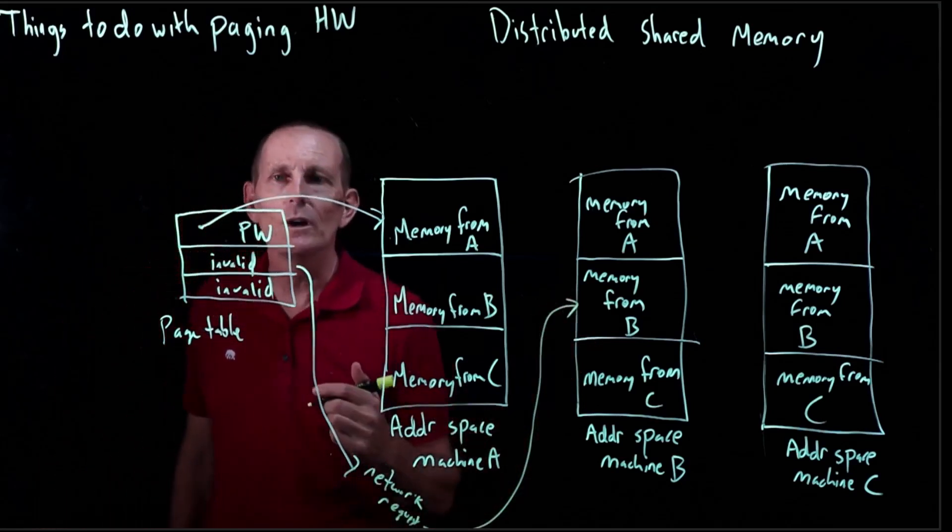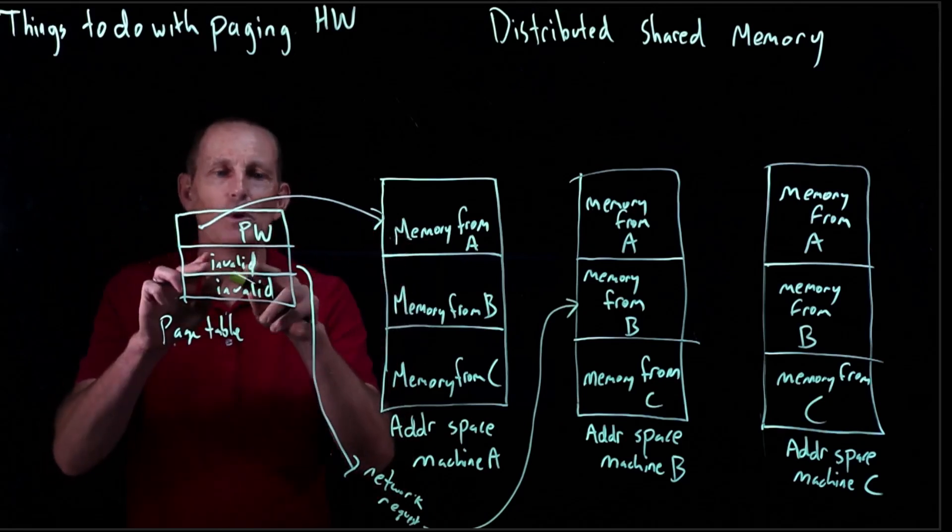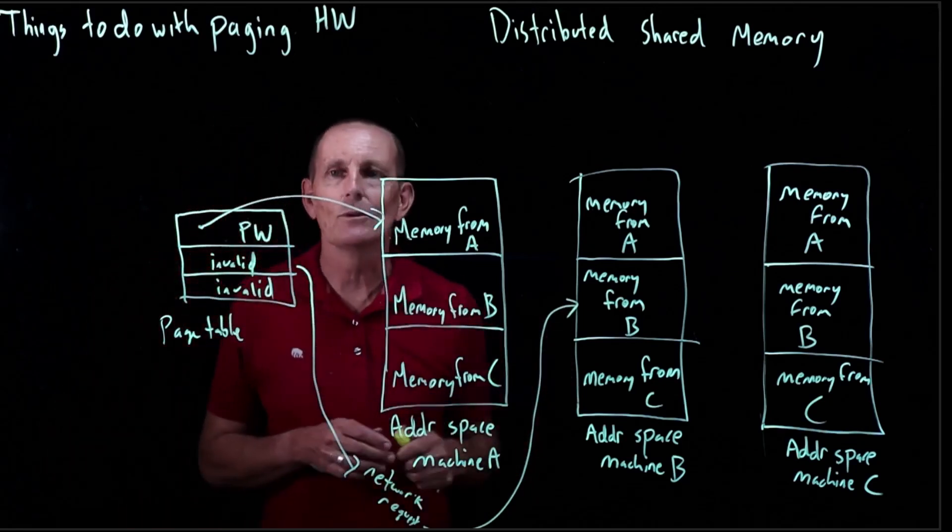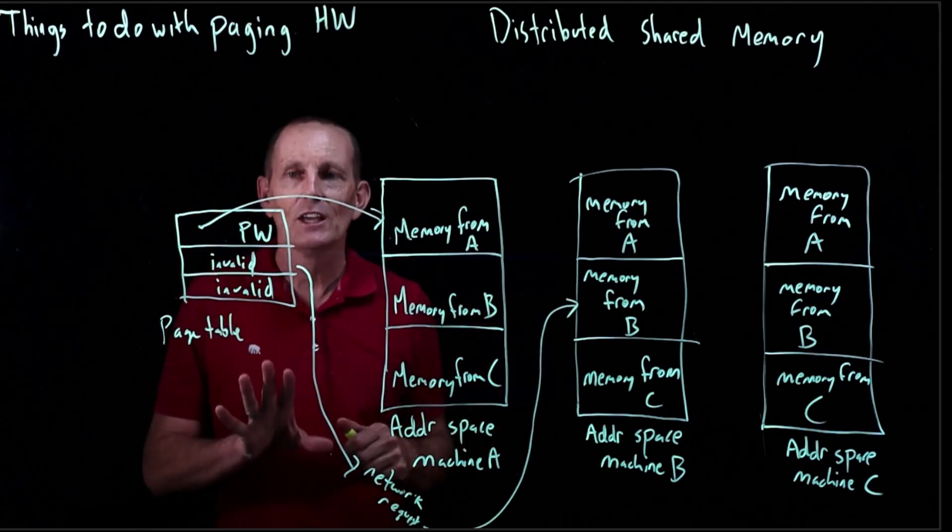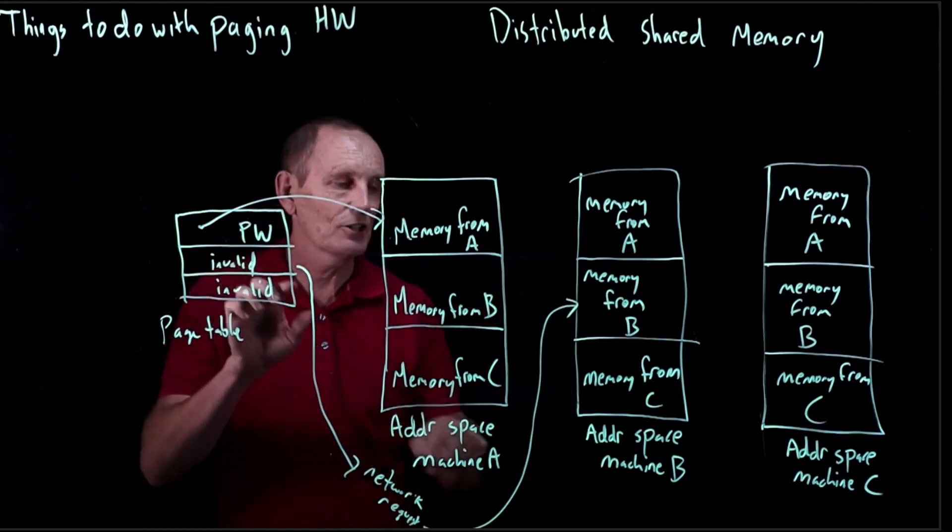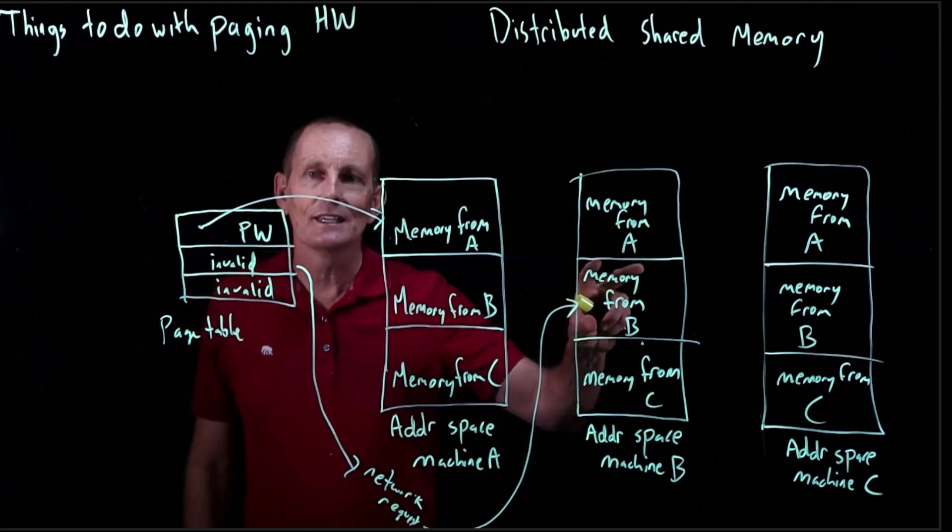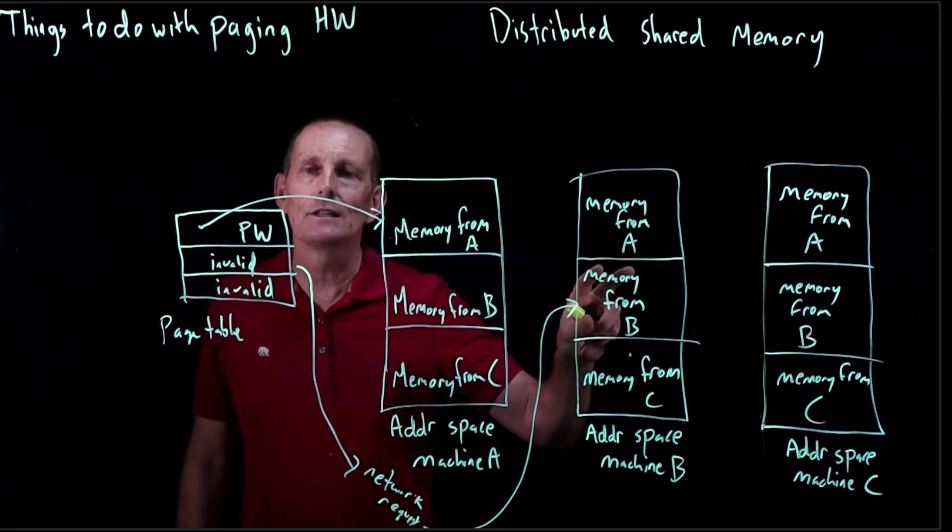So it would virtually have a pointer across the network to B. What do we mean by that? We just mean that the kernel on A knows how to communicate with B and get this data, either read or write this data.